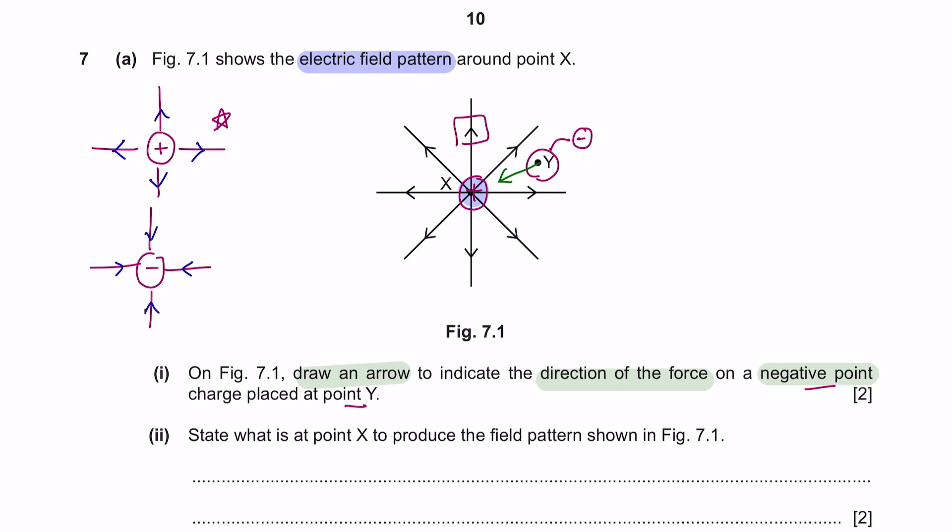Part 2, state what is the point at X to produce the field pattern shown in figure 7.1. At point X, it is a positive point charge.